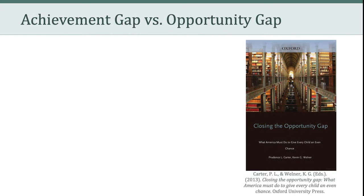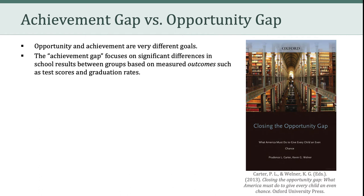Now I want to talk about Carter and Welner's book, Closing the Opportunity Gap. Importantly, they introduce a couple of key concepts, one of which is the difference between the achievement gap and the opportunity gap. Carter and Welner write that opportunity and achievement are very different goals. The achievement gap focuses on significant differences in school results between groups based on measured outcomes, such as test scores and graduation rates. The 2003 and 2015 PISA results that we were looking at are examples of focusing on achievement gaps — significant differences between groups in terms of outcomes.